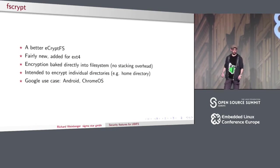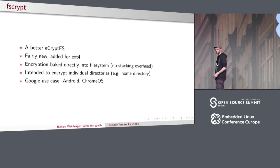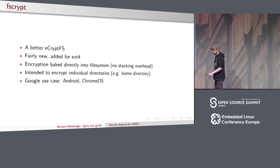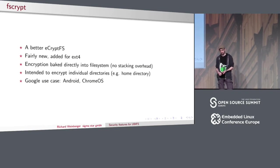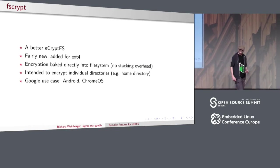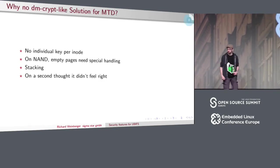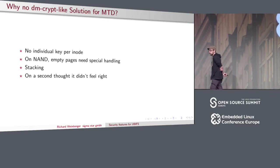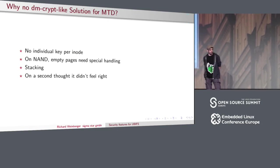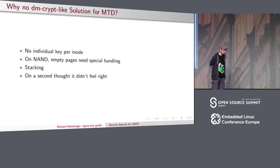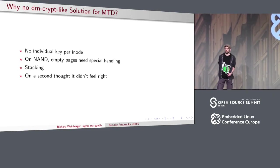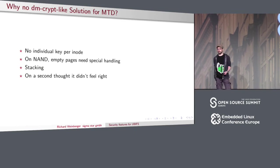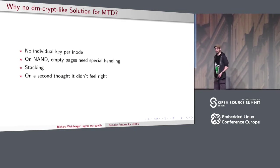You can have multiple encryption policies across multiple directories. The main use case was Google Android and Chrome OS — for example, in Chrome OS, the home directory of each user is encrypted. When I first thought about adding encryption to UBIFS, I thought it would be a good idea to implement something like ECrypt for MTD.